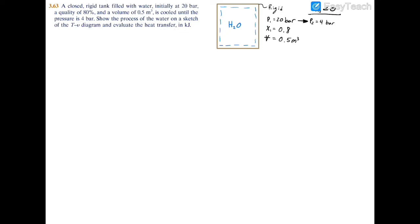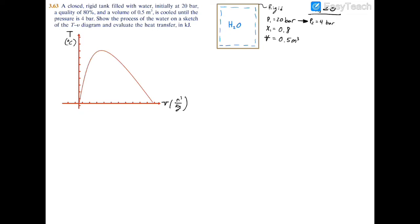I'm going to start by sketching out our TV diagram. I'll have a y-axis and an x-axis. The y-axis will have temperature in degrees Celsius, and the x-axis will have the specific volume in cubic meters per kilogram. Now I'm going to draw my vapor dome, and now I'm going to draw the first isobar. This whole blue line is going to have a constant pressure of P1 equals 20 bar, as given by the problem statement.